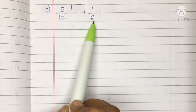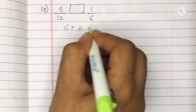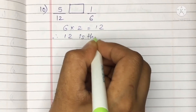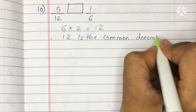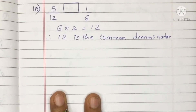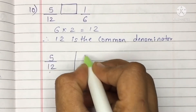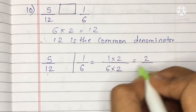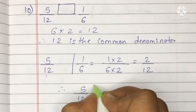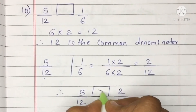Question 10: 5 upon 12 and 1 upon 6. Neither is common, but 12 appears in the table of 6 — 6 twos are 12. So we take 12 as the common denominator. Multiply 1 upon 6 by 2: 1 two is 2, 6 twos are 12. Now comparing 5 upon 12 and 2 upon 12 — 5 is greater than 2, so 5 upon 12 is greater.